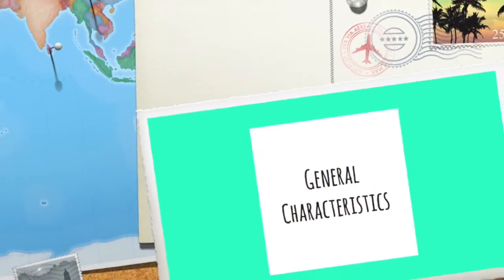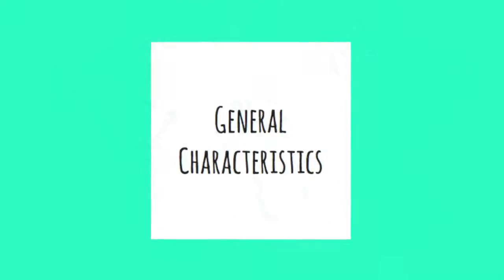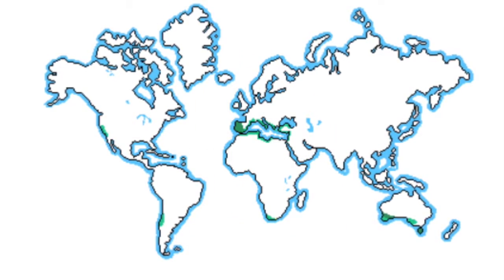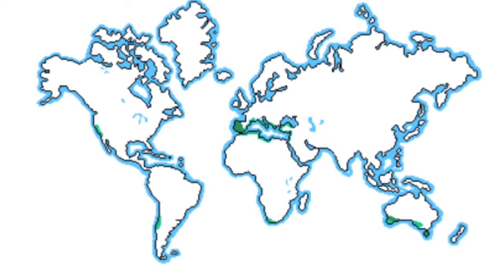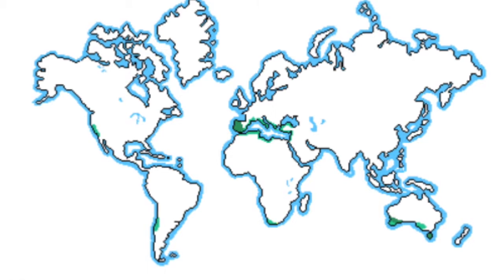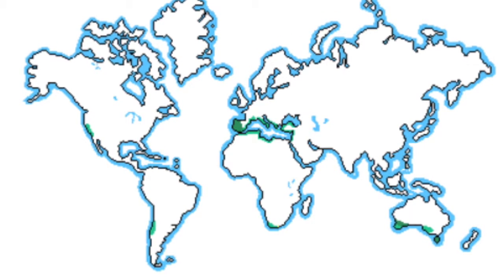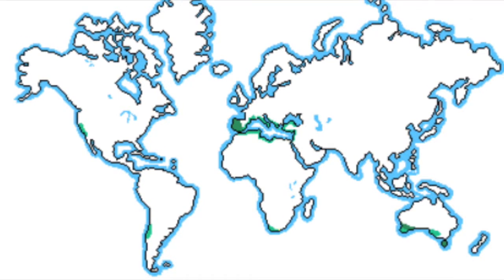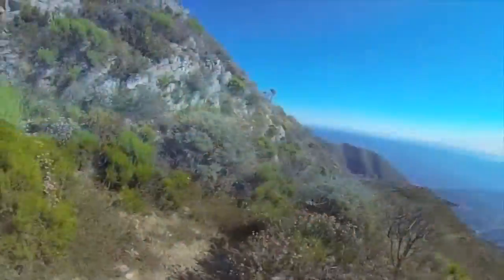This biome is found on most continents, including the western coast of the United States, South America, Cape Town, the western tip of Australia, and the coastal areas of the Mediterranean. Basically, it's found on any continent between 30 and 40 degrees latitude.